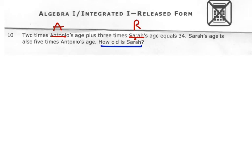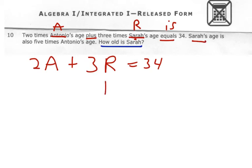So 2 times Antonio's age would be 2 times A, and it says plus, so plus, 3 times, so 3 times Sarah, I called Sarah R, and then it says equals 34. And if it would have said is, remember that word is also means equals. And then it gives me one more relationship, so that tells me I'm going to have two equations. Sarah's age and Sarah's R is, that tells me equals, 5 times Antonio's age, Antonio's A. So it's 5 times A. So we do have two relationships relating these two variables, or two equations.